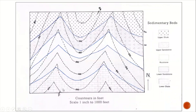In this map the scale is given: 1 inch equal to 1000 feet. The contours are given as 200, 300, and likewise. The beds are marked in blue. The details and direction of the beds are given here. With this information we have to make a cross-section along P and Q.